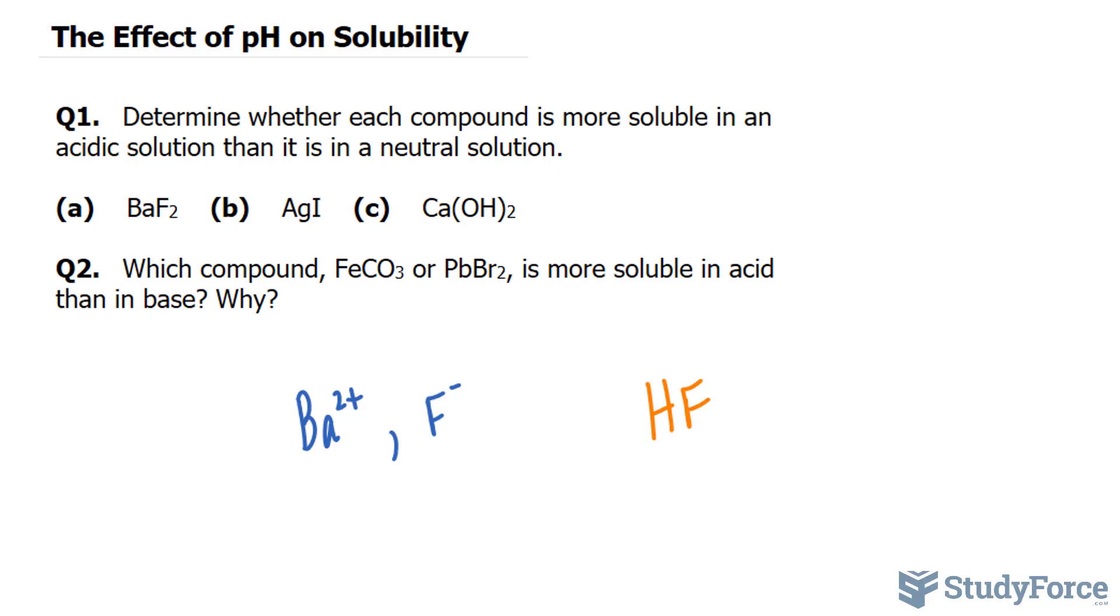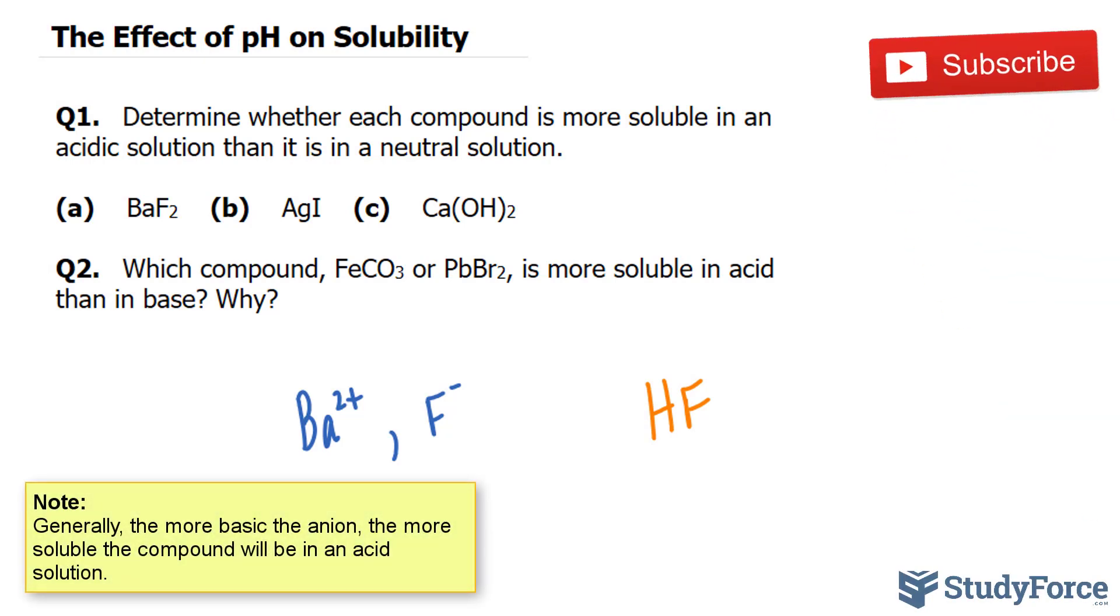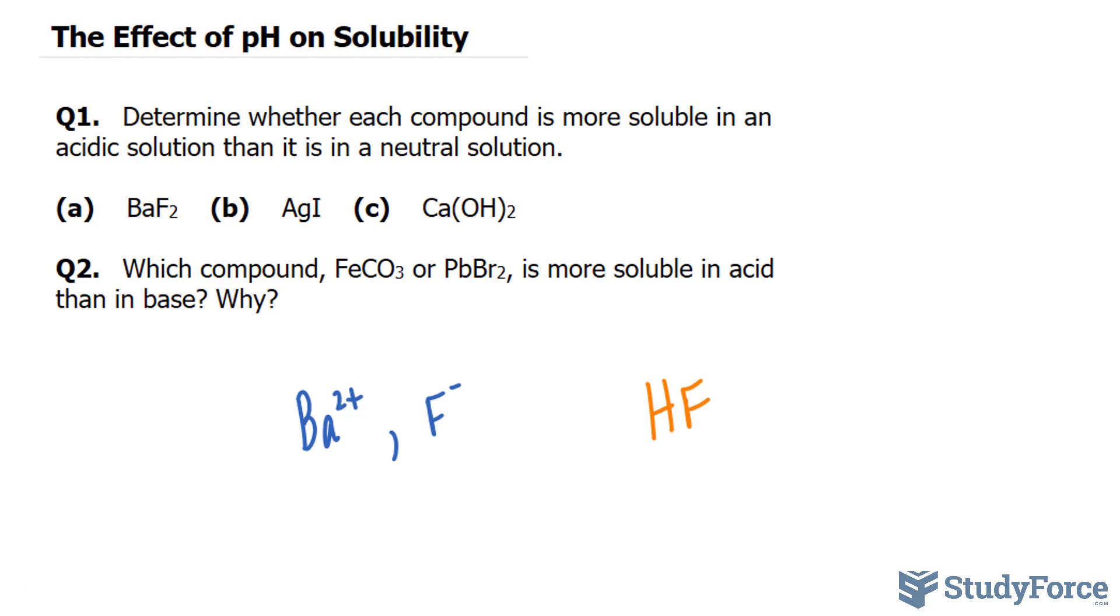Let's move on to question 2. Which compound, iron carbonate or lead 2 bromide, is more soluble in acid than in base? And we have to discuss why. Before we begin answering this, remember the following: that the solubility of an ionic compound with a strongly basic or weakly basic anion increases with increasing acidity.